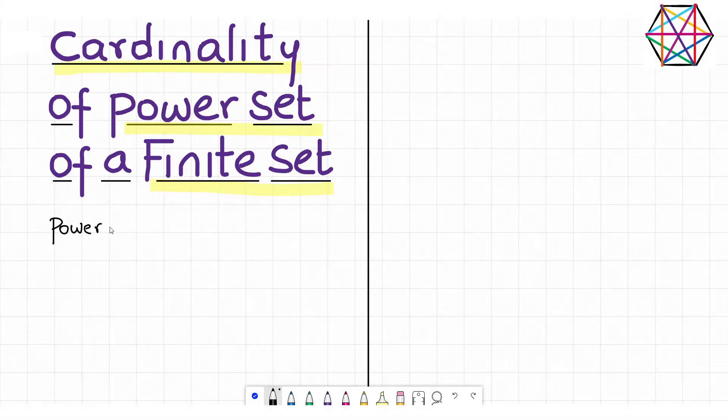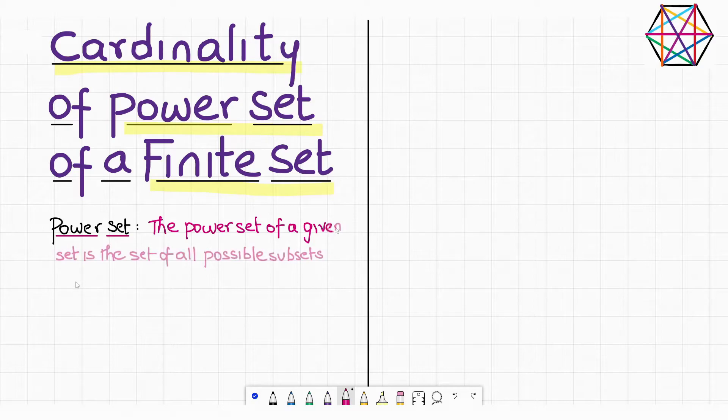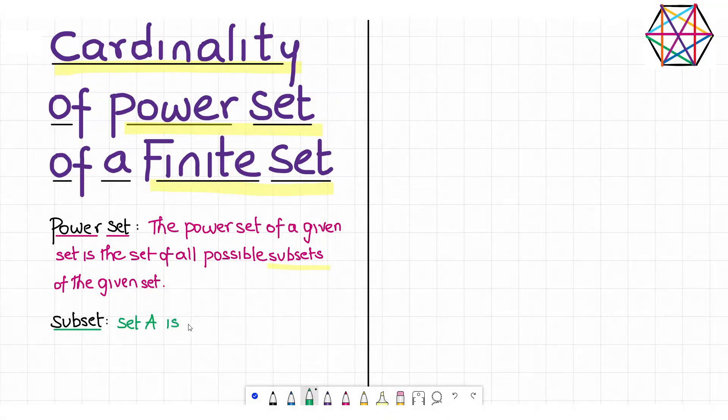So what is a power set? The power set of a given set is by definition the set of all possible subsets of the given set. Now, this calls for another definition. What's a subset? Set A is set to be a subset of set B if and only if every element of A is also an element of B.